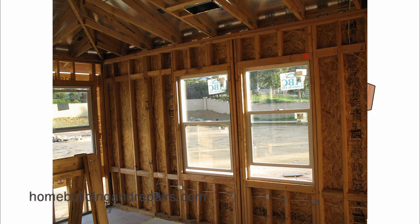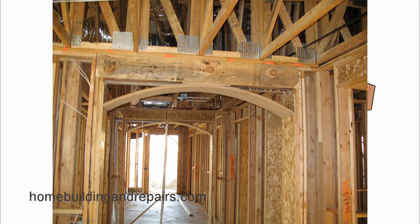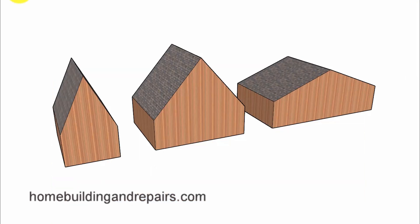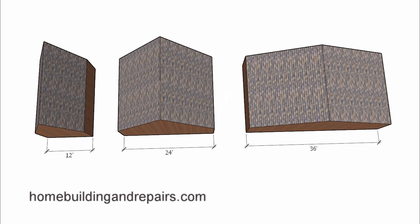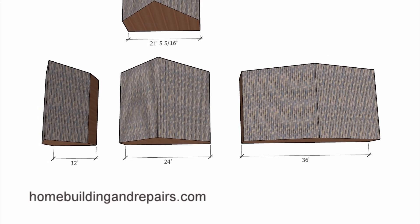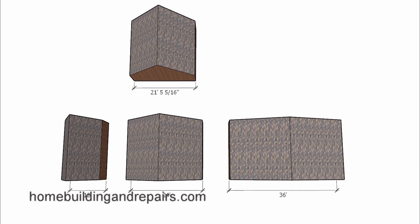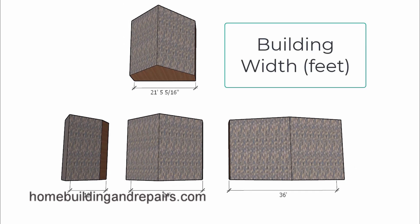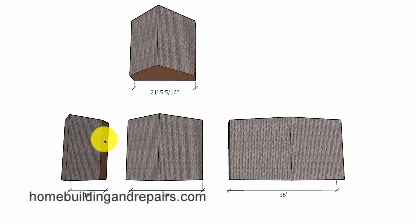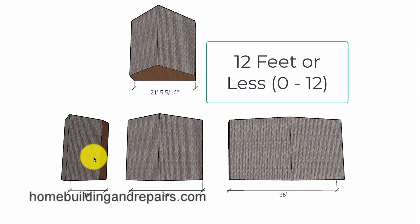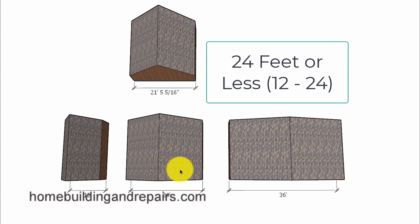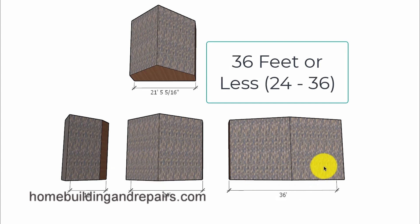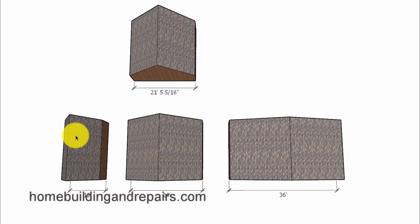However, I am going to provide you with some of the stuff that might be difficult to interpret or understand in those pages. Let's get started with the first item, which will be the width of the buildings. On the page I'm referring to, it should say building width with feet in parentheses, and you're going to have three columns: one for buildings 12 feet and less, one for 24 feet or less, and one for 36 feet or less when looking up your header sizes.